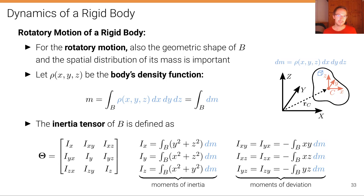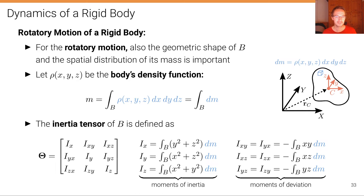We define a quantity called the inertia tensor of b, which is defined as a matrix. Its entries are the moments of inertia and the moments of deviation. This is just a definition we take for granted for now, but it becomes useful on the next slide — it's a definition based on the body's mass distribution.